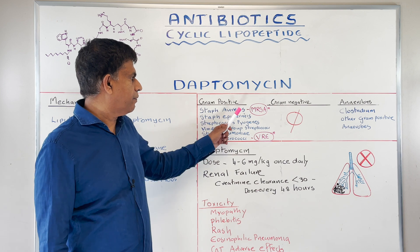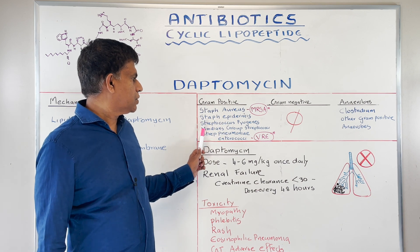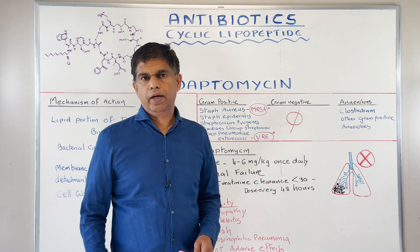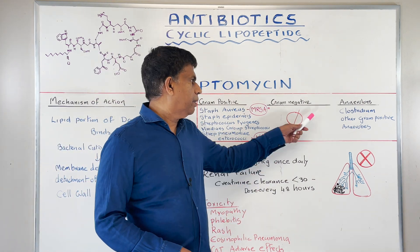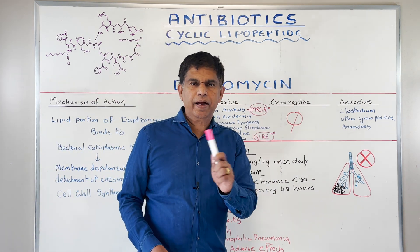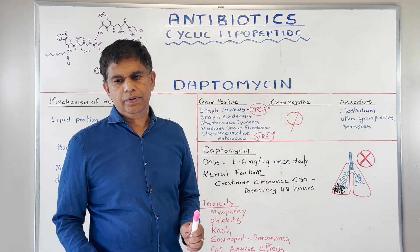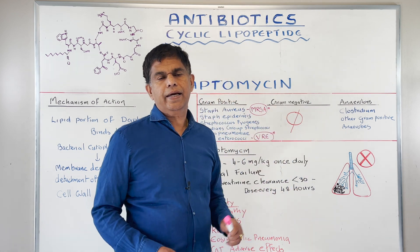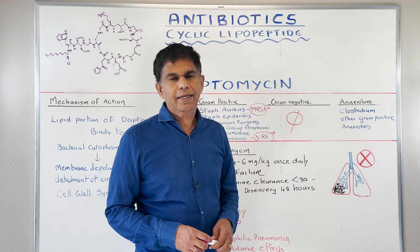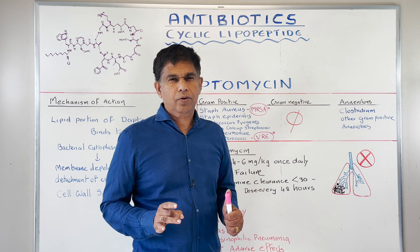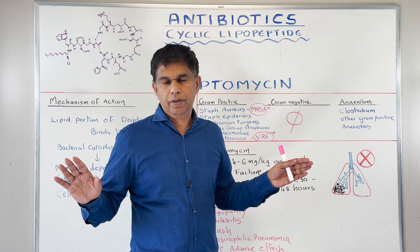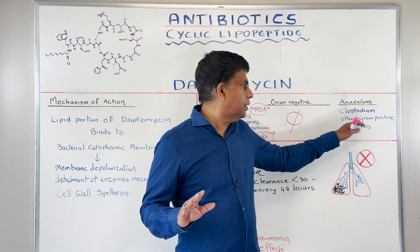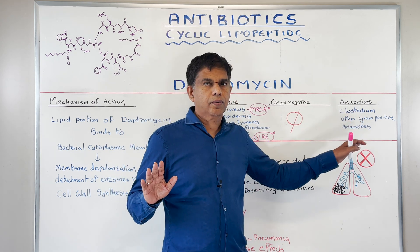The other gram-positive coverage includes Staph aureus, Staph epidermidis, Streptococcus viridans group, Streptococcus pneumoniae, and enterococci. Remember, again, no gram-negative coverage, just like vancomycin. For anaerobic coverage, daptomycin covers gram-positive anaerobes, but not gram-negative anaerobes — remember that.